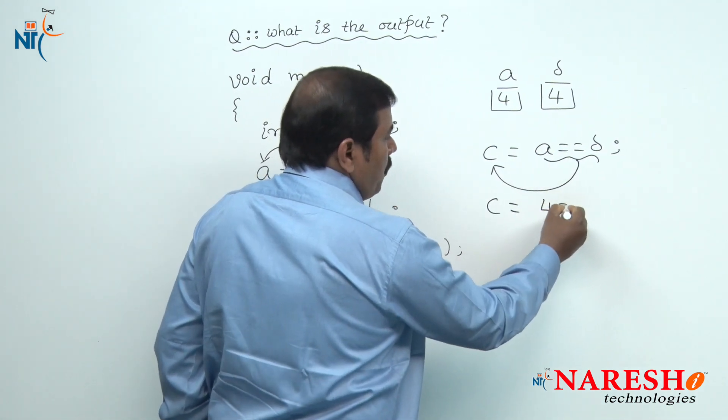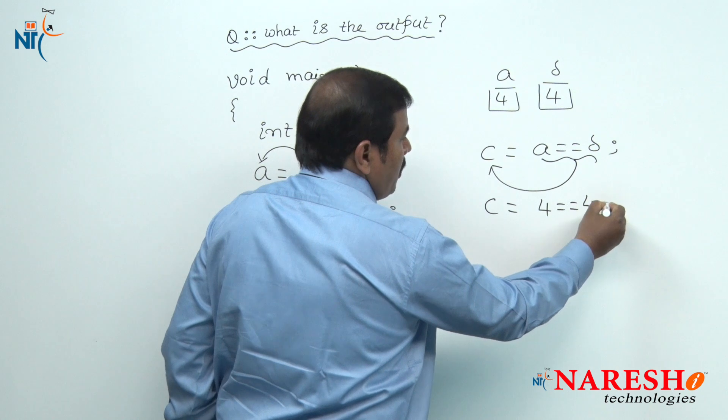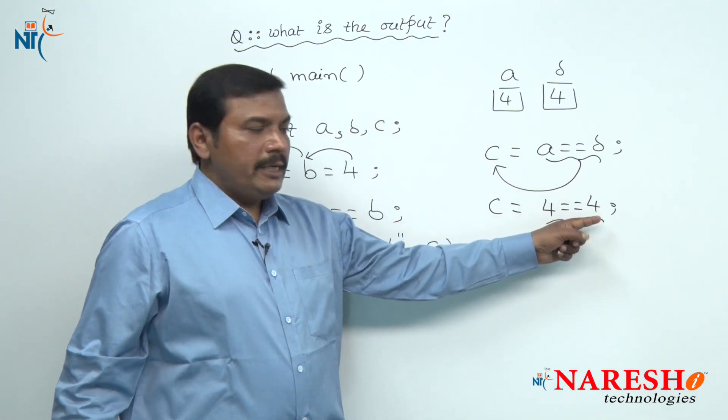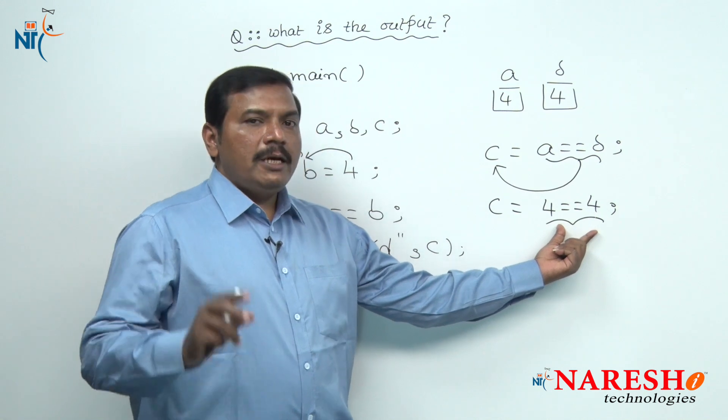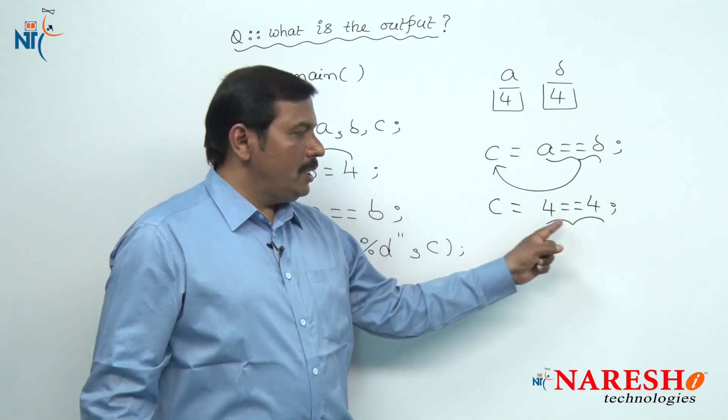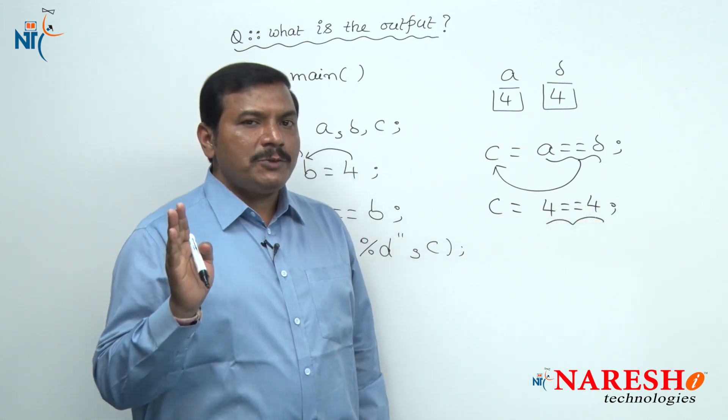Here the value of A is 4 and the value of B is also 4. Four equals four. It is a relational expression with two possible values, either true or false. The value of this relational expression is true.